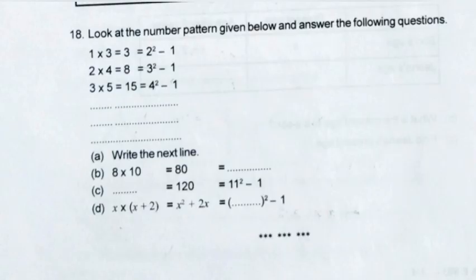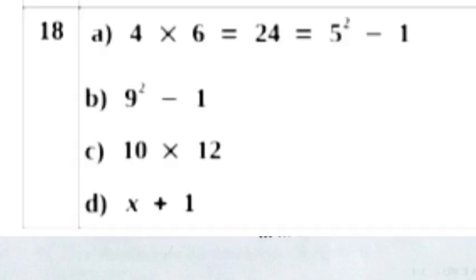Question 18. Look at the number pattern given below and answer the following questions. 1 into 3 equals 3 equals 2 squared minus 1. 2 into 4 equals 8 equals 3 squared minus 1. 3 into 5 equals 15 equals 4 squared minus 1. A. Write the next line. B. 8 into 10 equals 80 equals 9 squared minus 1. C. 10 into 12 equals 120 equals 11 squared minus 1. D. x into (x plus 2) equals x squared plus 2x equals (x plus 1) squared minus 1. Answer: A. 4 into 6 equals 24 equals 5 squared minus 1. B. 9 squared minus 1. C. 10 into 12. D. x plus 1.